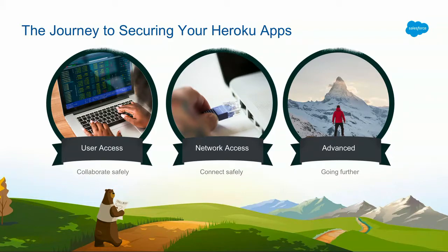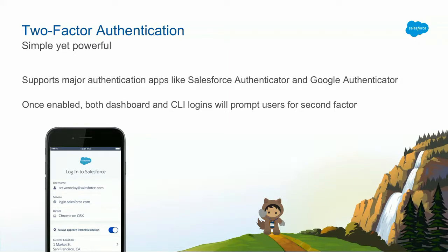If you take one thing away from this talk about using Heroku securely, let it be to enable two-factor authentication. You can use a mobile app like Salesforce Authenticator, which is free and available in both the Android and iPhone app stores. That provides a time-based second factor to enter every time you log into Heroku. It's not only your email address and password — you probably see in the news that it's very common for companies to have that information stolen. Hopefully you're using a unique password for every service, but if your email and password are found online and they work for Heroku too, that's really bad news. This second factor is something the attacker doesn't have — they don't know the code that changes every 60 seconds. So please make use of this.